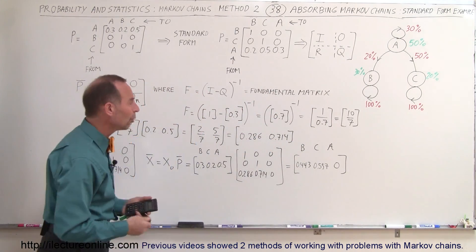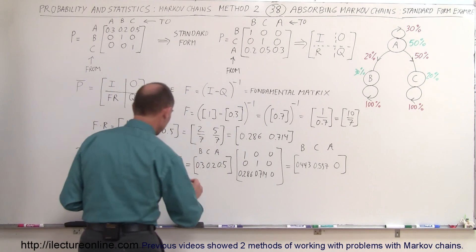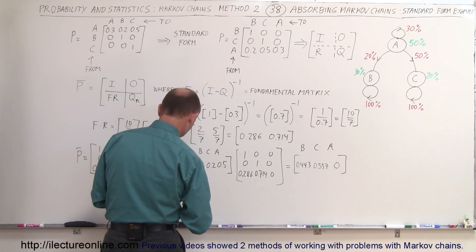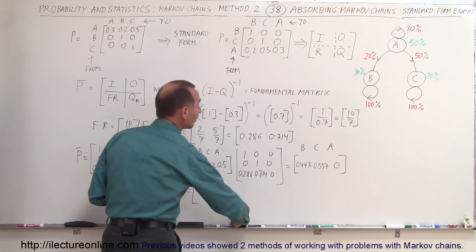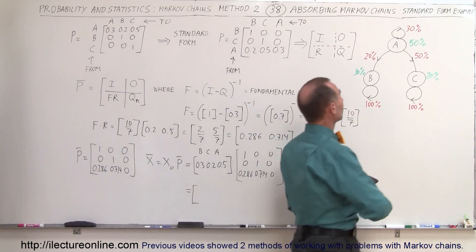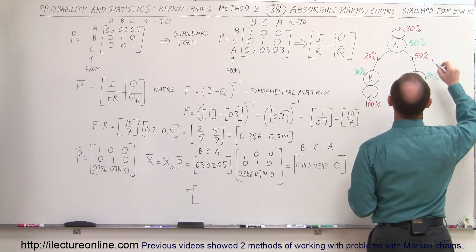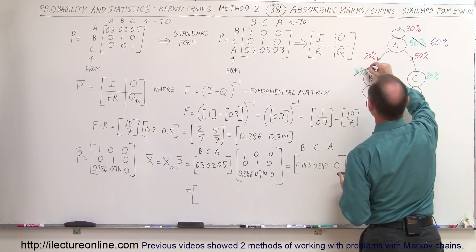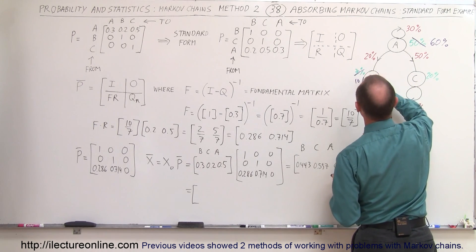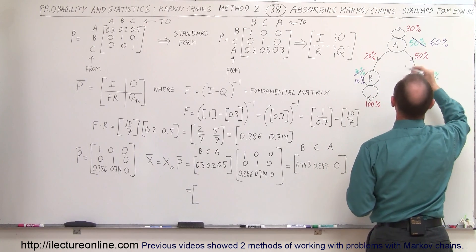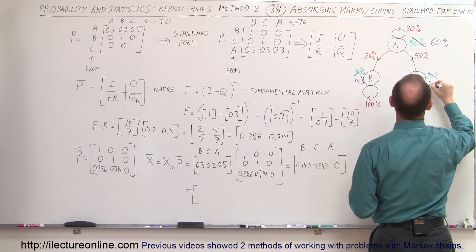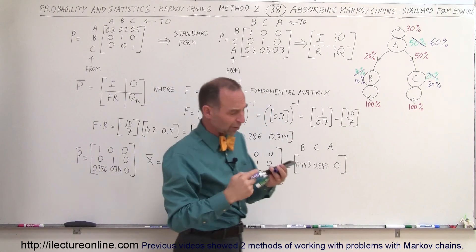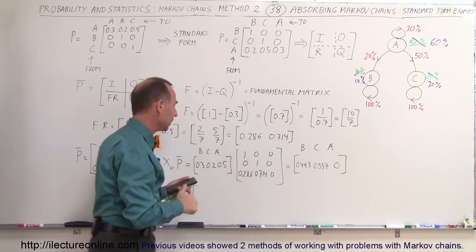Let's try one more initial state. This time let A start at 60%, B at 10%, and C at 30% of the population. Let's see what the final stable state will be in this case.